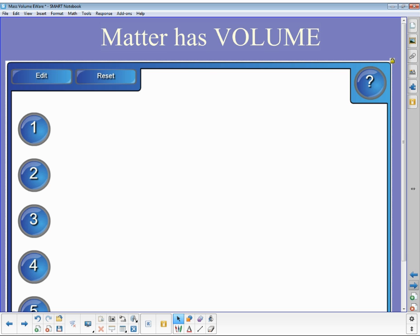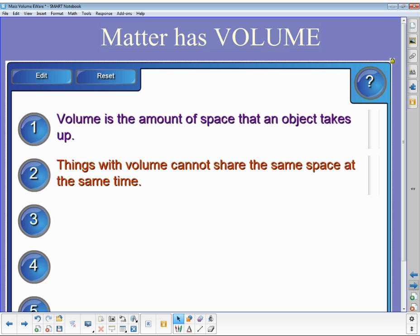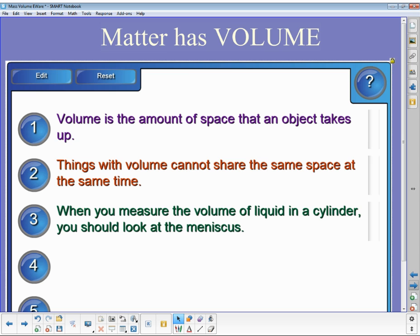So some basic tenets of volume. Anything that is made of matter does in fact have volume. It is the amount of space that an object takes up. Things with volume cannot share the same space at the same time. So what that really means is you can't have things in the same place as something else. You can't overlap two things.